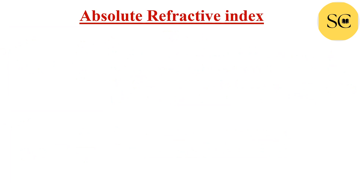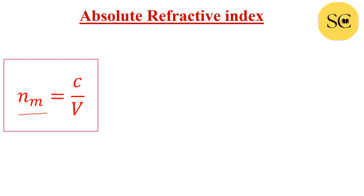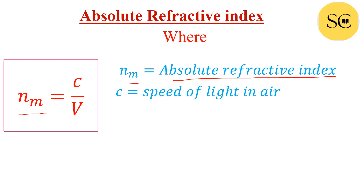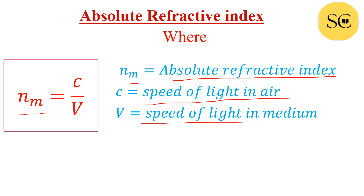Absolute refractive index: Nm = C/V, where Nm is absolute refractive index, C is speed of light in air or vacuum, and V is speed of light in the given medium. These formulas are very, very important. Learn these formulas and write the important points with their units.